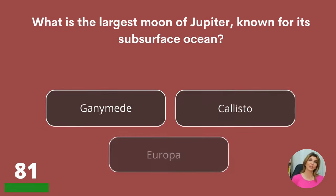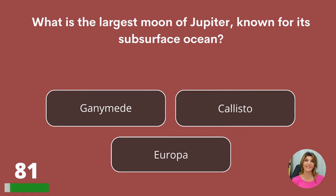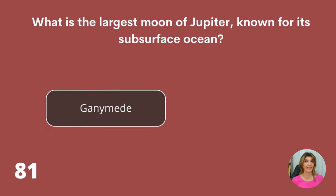What is the largest moon of Jupiter, known for its subsurface ocean? Ganymede, Callisto, or Europa? Ganymede.